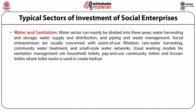Water and Sanitation: The water sector can mainly be divided into three areas — water harvesting and storage, water supply and distribution, and piping and waste management. Social entrepreneurs are usually concerned with point-of-use filtration, rainwater harvesting, community water treatment and small-scale water networks. Usual working models for sanitation management are household toilets, pay-and-use community toilets, and ecosystem toilets where toilet waste is used to create biofuel.